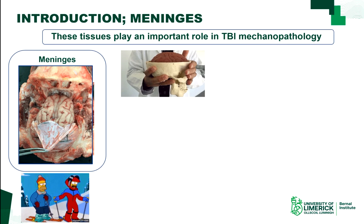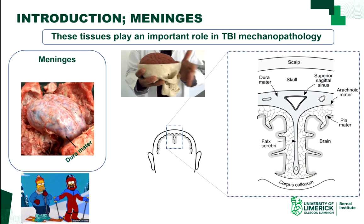We can see here in this video on the left the meninges being separated from the brain, so it is this strong, tough, very tight material around the brain, and it is important to understand the material properties that we have for each tissue within our brain.